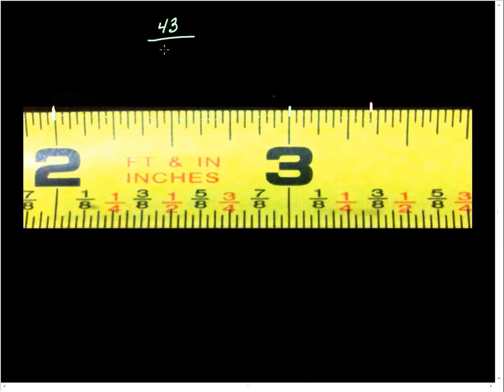And so that means that there are 32 parts in the one whole inch. So if I wanted to express this particular measurement, and that was in red, so it's here to here, it would be 43/32nds of an inch.